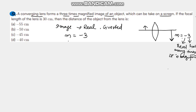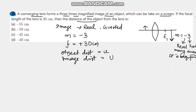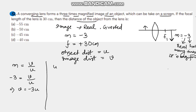The focal length of the lens is 30 centimeters. It is positive because the first principal focus lies to the right of the lens for a convex lens. So focal length f is positive 30 centimeters. We have to find the object distance u. Let the image distance be v. We know that magnification equals v by u for a lens. Putting in the values: minus three equals v by u, so v equals minus three u.